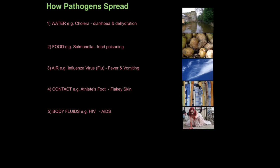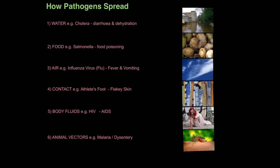Some pathogens are transmitted through bodily fluids — for example, HIV, which can develop into AIDS, where your immune system is compromised so severely that even a common cold can kill you. Pathogens can be transmitted through bodily fluids such as blood, breast milk, and semen. Finally, some pathogens require animal vectors, or animal carriers. For example, the protozoan that causes malaria uses a mosquito as a vector. Also, the common housefly can spread a disease called dysentery by landing on your food and contaminating it.